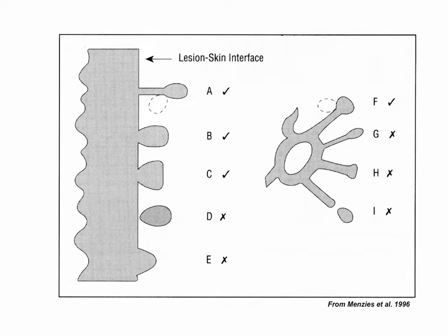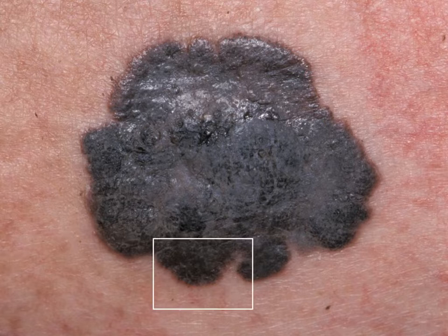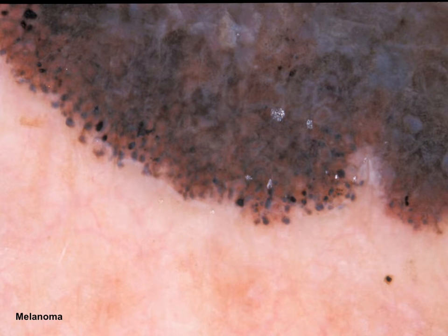In D, we see what we call a peripheral globule. This does not correspond to what we call a pseudopod. Here you have the clinical picture of a rather large-sized melanoma — 7.8 millimeters from left to right. If we look with the dermatoscope at the lower part, in this area, what we're going to see is multiple pseudopods throughout the entire periphery.